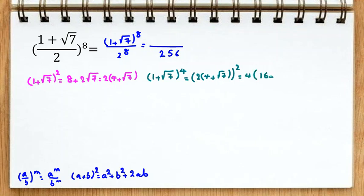4 squared is 16 plus 7, 1 plus 8 root 7 plus 8 root 7. Now it equals 16 plus 7, 23 plus 8 root 7.